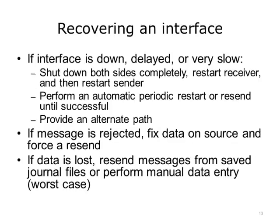Here are some strategies for resolving common interface problems. If the interface is down, delayed, or very slow, the best idea is to restart it — shut down both sides completely and restart the receiver first, followed by the sender. Restarting an interface is a quick and simple method to recover service for many issues and should usually be considered as a first response. Sometimes you can automate restarts so the system detects a failure and restarts itself. If none of the above work, you might be able to route the data flow via another path. If a message is rejected, figure out why, fix the data on the source, and force a resend. You might also skip the offending message and let users know what was skipped so they can manually enter or push it through. If data is lost, try to regenerate it by resending messages from saved journal files; in the worst case, manual data entry might be needed.